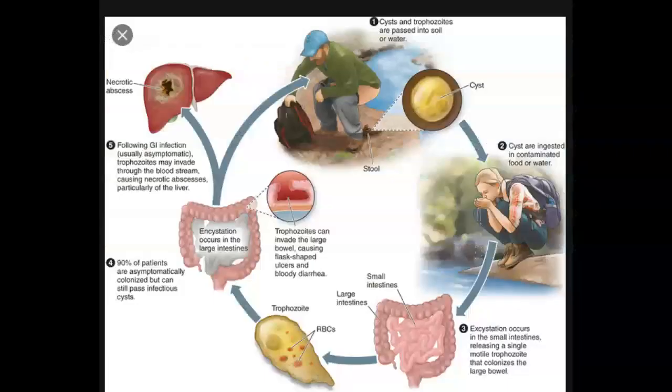Humans are the only known host for E. histolytica. This organism also occurs in cysts and trophozoites. E. histolytica either feeds on bacteria in the intestine or invades and ulcerates the mucosa of the large intestine. The parasite can be limited to the GI tract or can extend outside the intestines. Individuals can have intestinal amoebiasis without any symptoms, or symptoms can range from mild to severe.